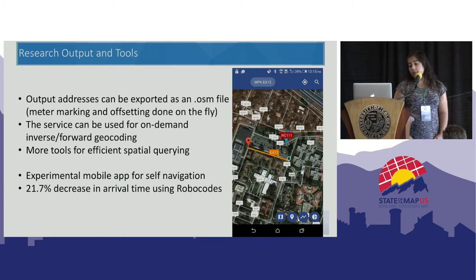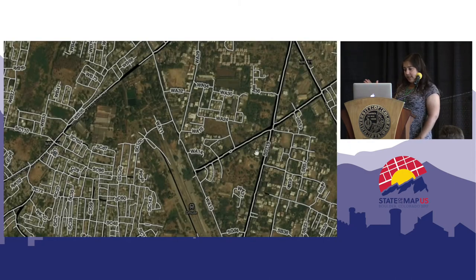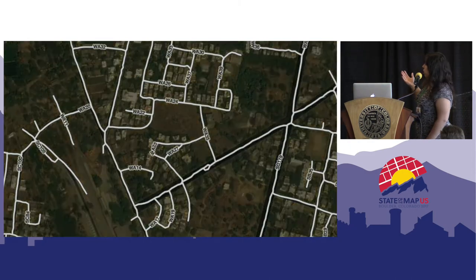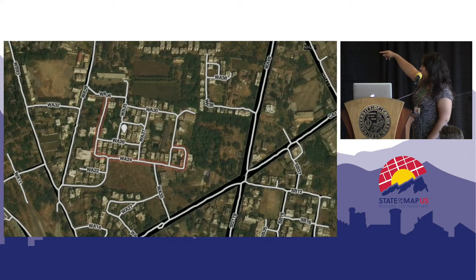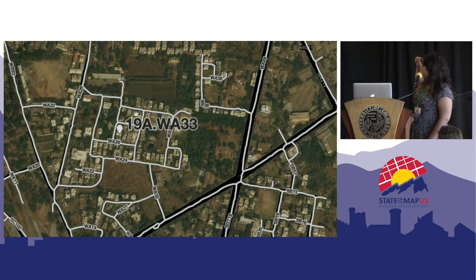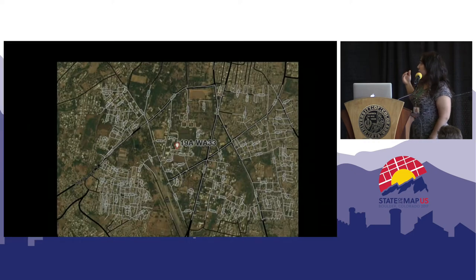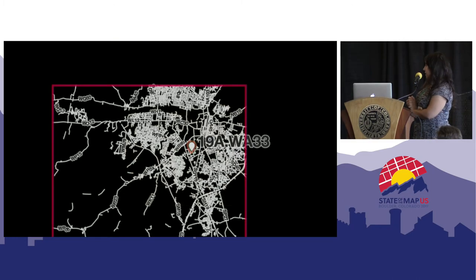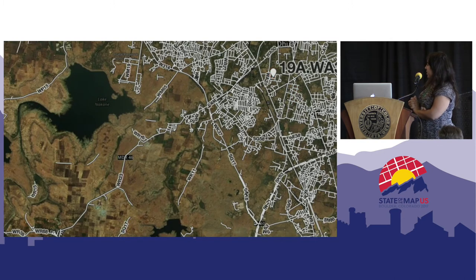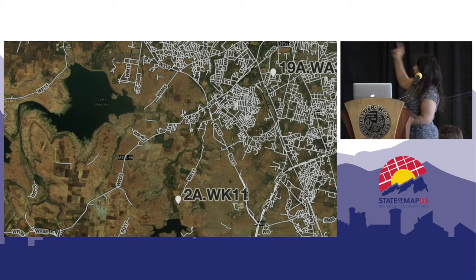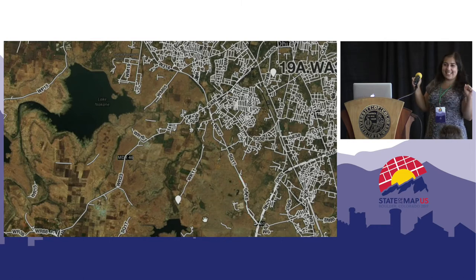We observed that if people are using Robocodes for self-location, there is a 21.7% decrease in arrival times. This is the output of our system — all roads are extracted from satellite images and you can see the road names. We click at a point and the address is automatically given on the fly. This is forward geocoding, but we can also do the inverse — entering an address like 2AWK11 and it shows where that location is on the map.